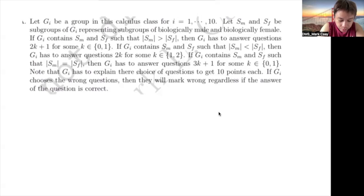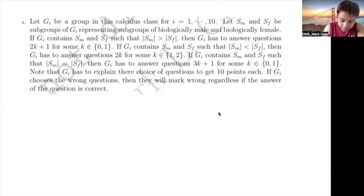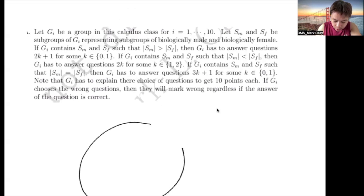Let's start now. The instruction says: let G_I be a group in this calculus class for I from 1 to 10. Let S_M and S_F be subgroups of G_I, representing subgroups of biologically male and biologically female. So you have a group G_I, and this group is completely subdivided by S_M and S_F.